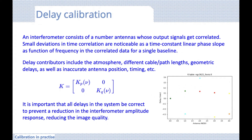This is what the delay correction — the CASA gain K matrix solution — gives us. It solves the residual delay errors. We use primary calibrators, so a flux or bandpass calibrator, to solve for these steps. When inspecting the K table solution after calculation, what you want to see is only small nanosecond offsets — nanosecond differences between per-antenna per-polarization channels across all channels. We want only nanosecond offsets for MeerKAT.